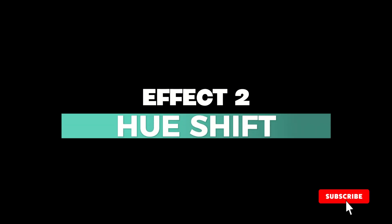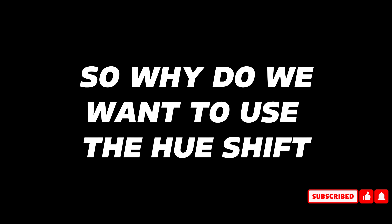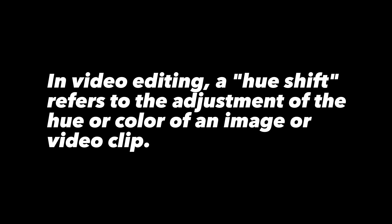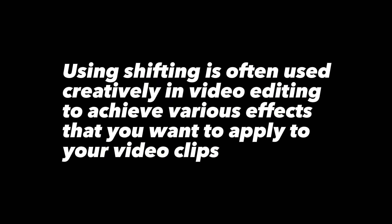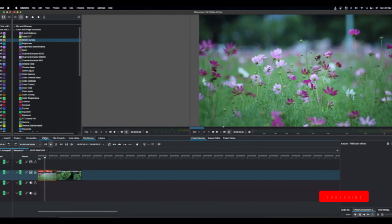The second effect is Hue Shift. In video editing, hue shift refers to adjusting the hue, or color, of an image or video clip by shifting the position of colors on the color wheel. For example, in advanced editors like DaVinci Resolve, you have different color wheels to adjust this. Hue shifting is often used creatively to achieve various effects on your video clip.